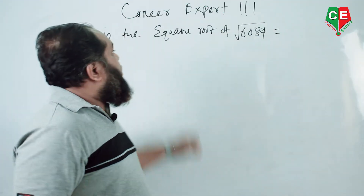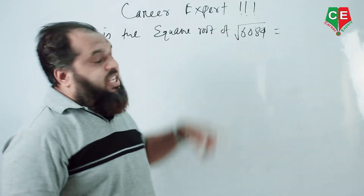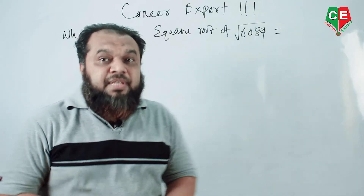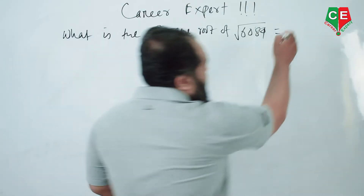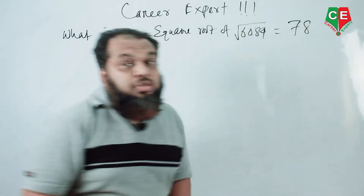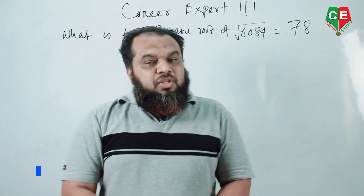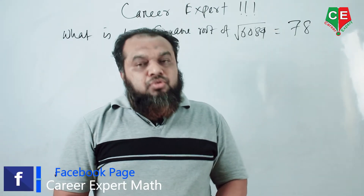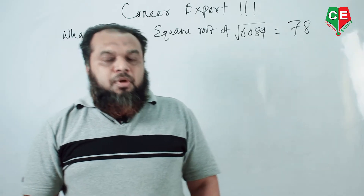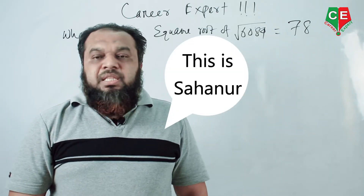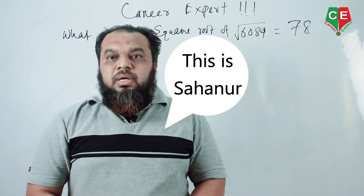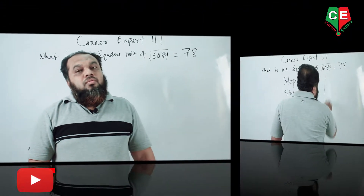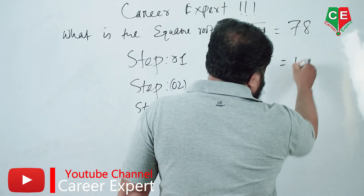What is the square root of 6084? One, two, three, four, five seconds — it is 78. Don't worry, in this video I will share with you the tricks on how to solve these types of mathematical problems in five seconds. This is Sharno, you are watching Career Expert YouTube channel.